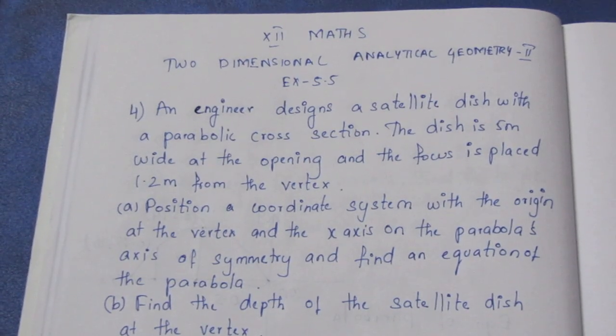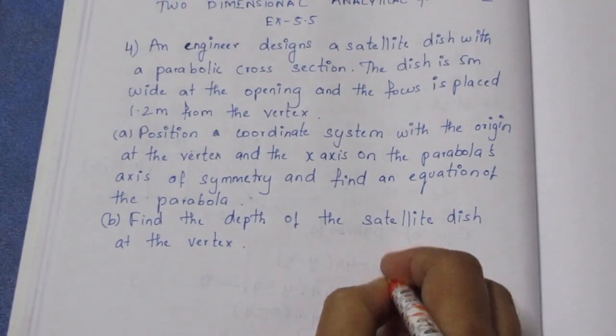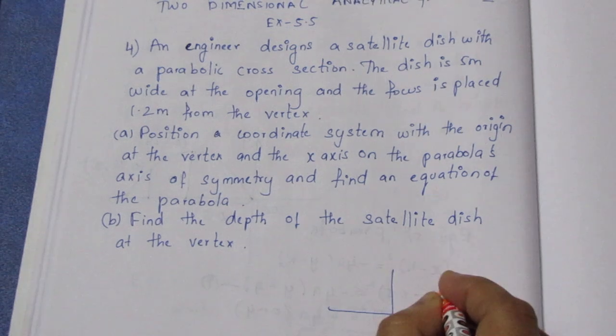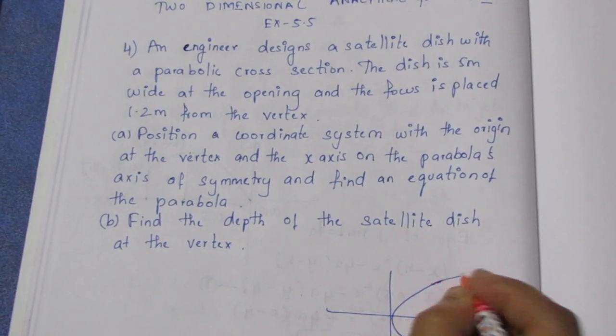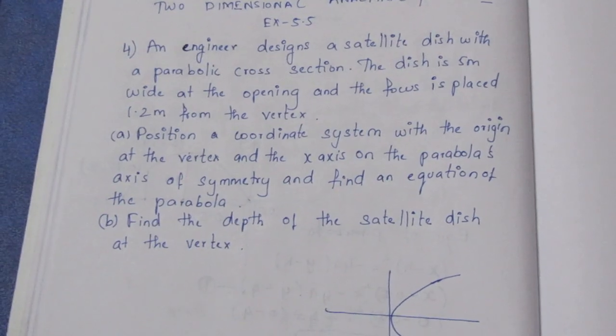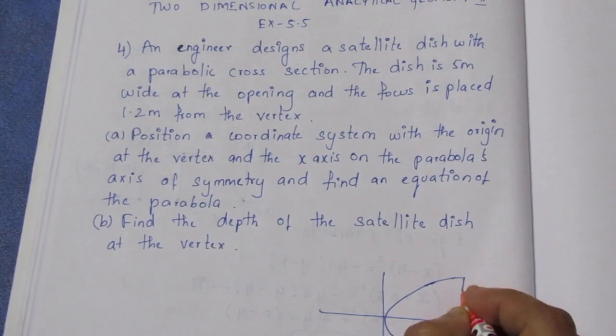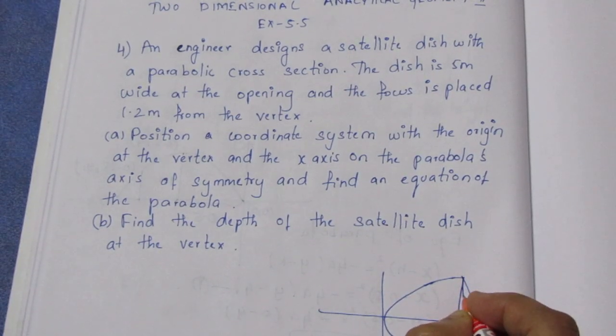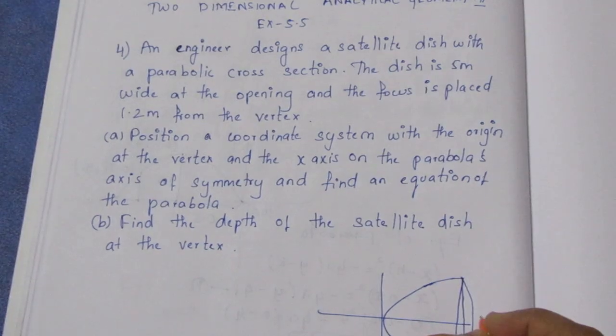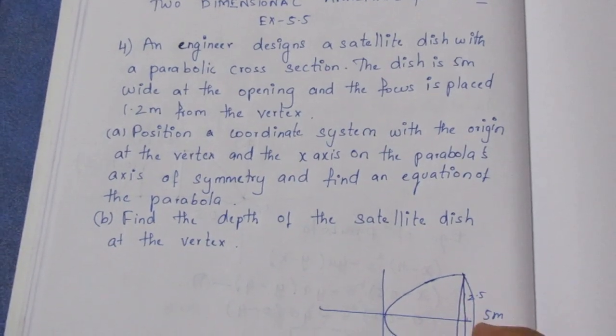The satellite dish looks like this. This is 5 meter wide at the opening. This is the opening, 5 meter wide. So here is 2.5 meter on each side.